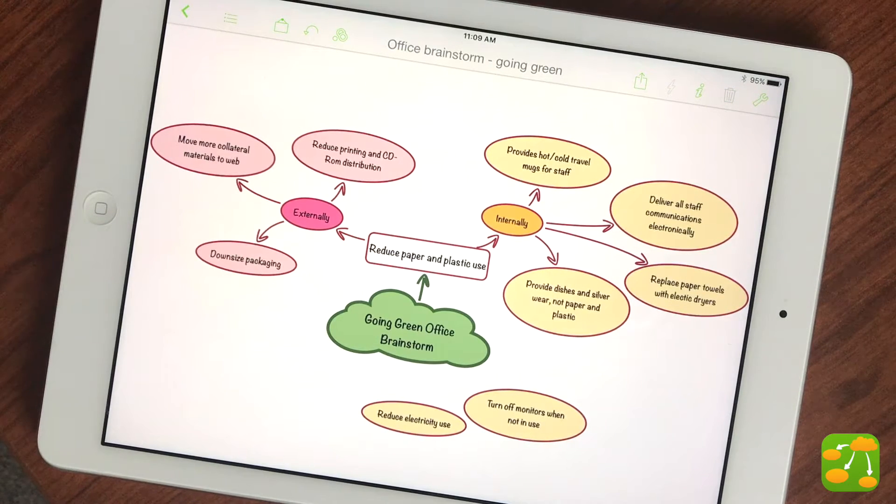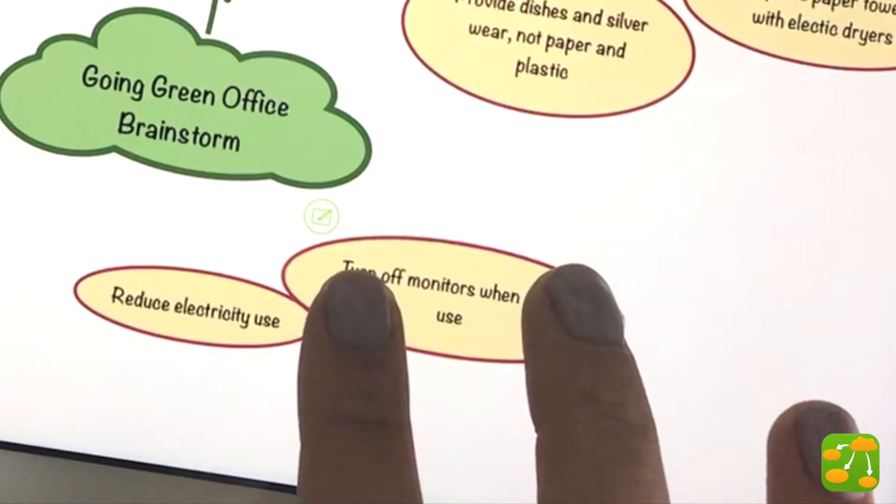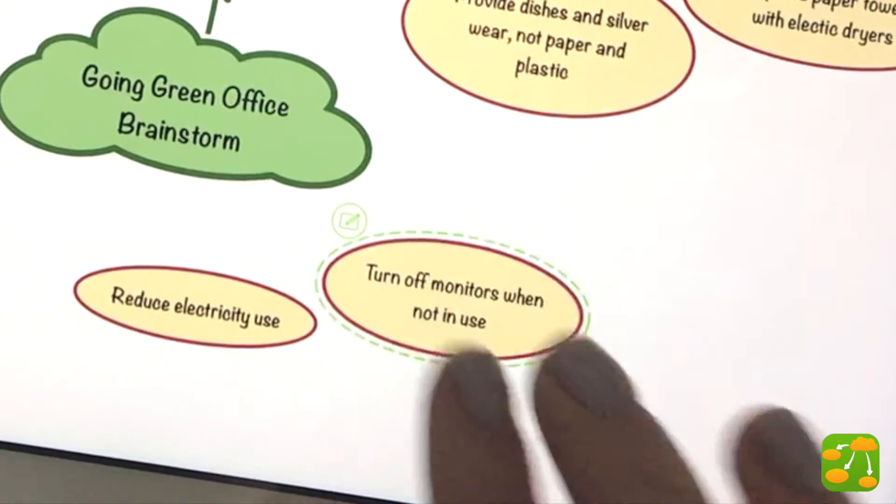If you want to make your symbols bigger or smaller manually, tap to select the symbol, then use a two-finger pinch to change the symbol's size.